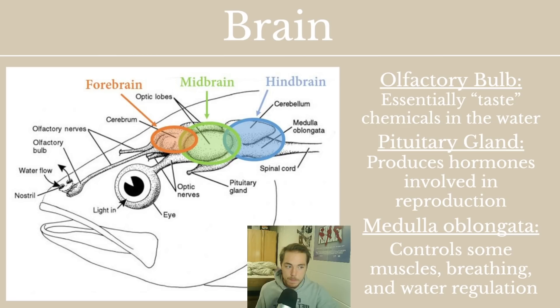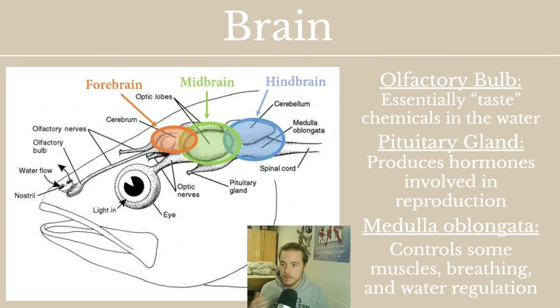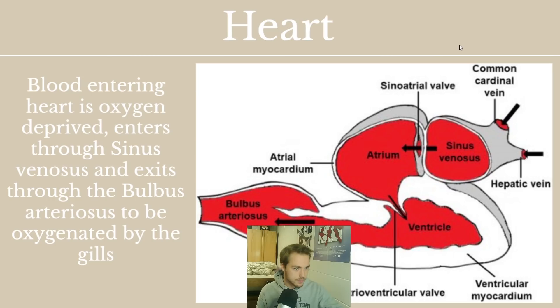The pituitary gland, located below the brain, produces hormones involved in reproduction and stimulating reproduction. We'll probably talk about it more in the lecture on reproduction, but it's important to know it's there and is part of the brain. Finally, in the back, you'll see the medulla oblongata, which is the first part of the brain directly after the spinal cord. It controls some of the muscles, breathing, and osmoregulation — or water regulation. These are unconscious functions the fish's body performs without any conscious effort.